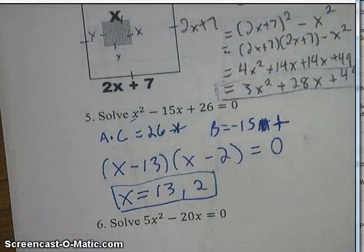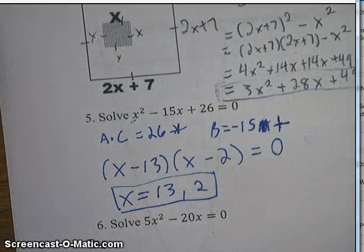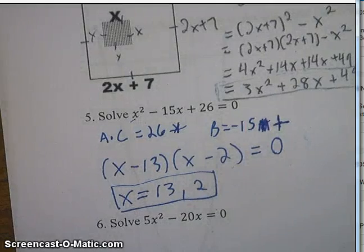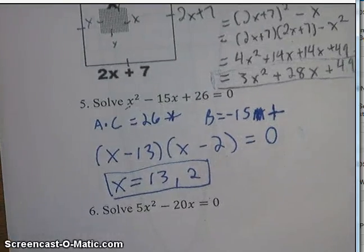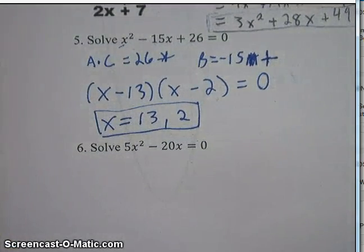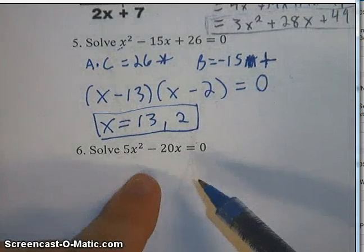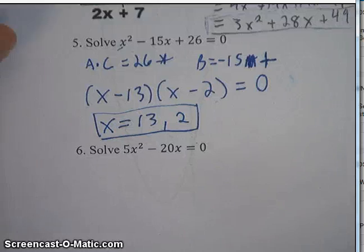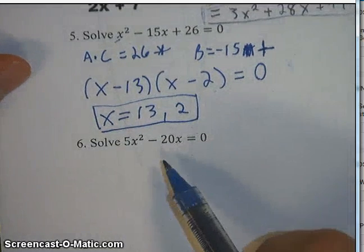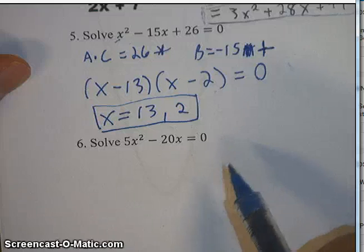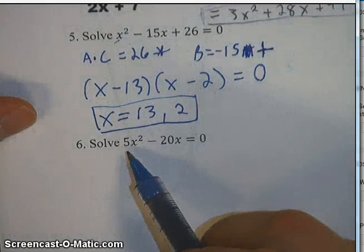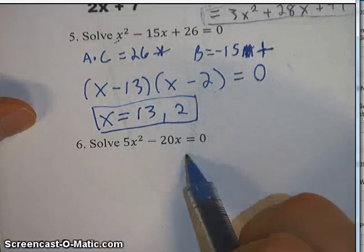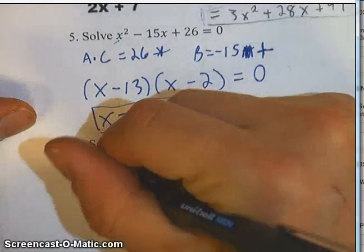You could have graphed it or used the quadratic formula and gotten the same answer — use whatever works best for you. But always factor out a common factor first if you can. In number 6, we have 5x² minus 20x equals 0. Ask yourself if there's a common factor. I see a common factor of 5 and x, so factor out 5x, leaving 5x(x minus 4) equals 0.